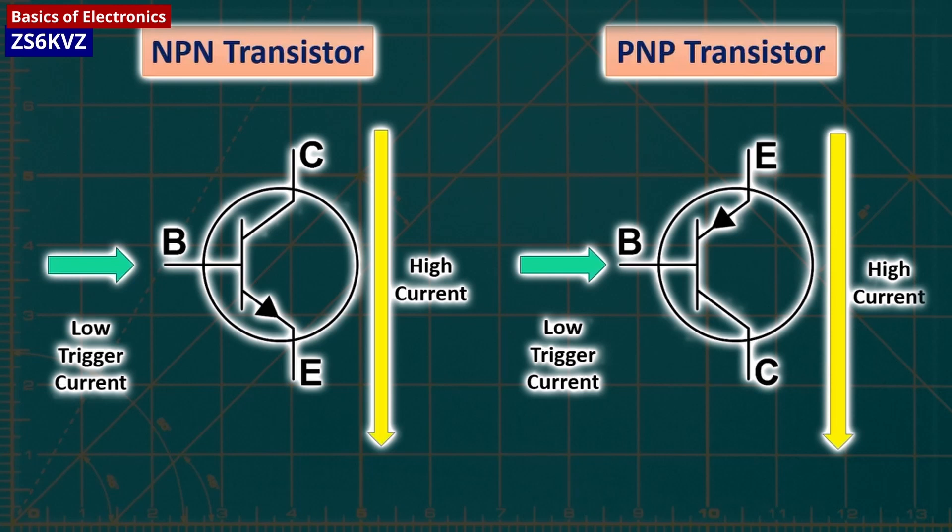PNP transistors allow electricity to pass from the emitter pin to the collector pin and are represented in a schematic with a line for a base, a diagonal line connecting to the base, and a diagonal arrow pointing towards the base.